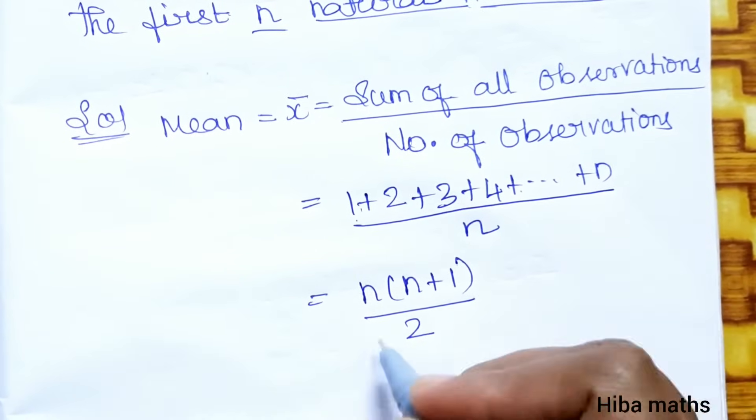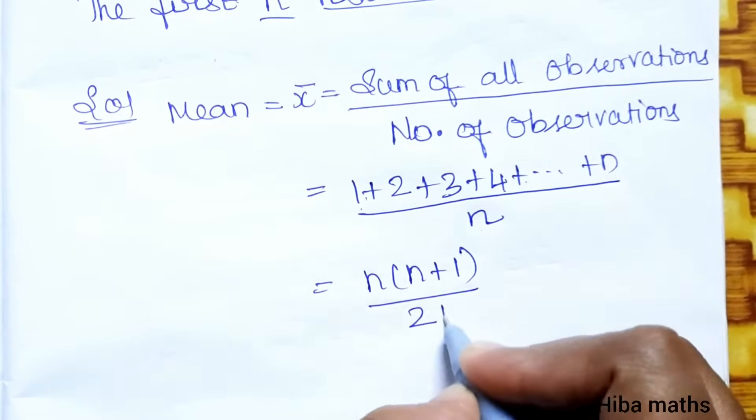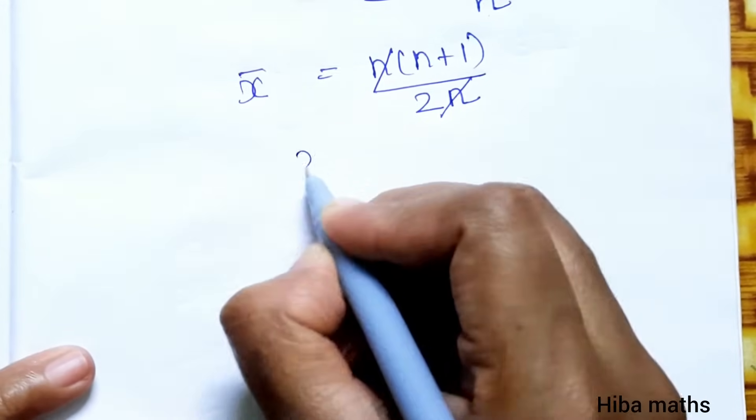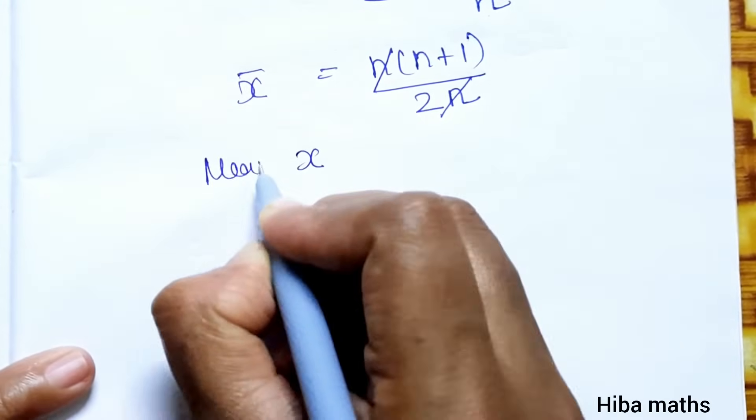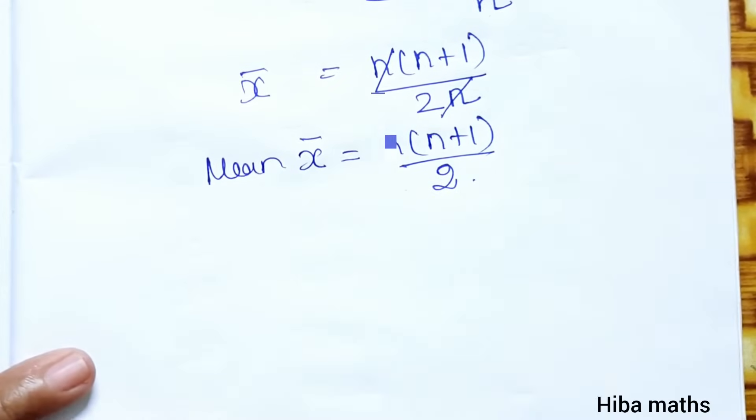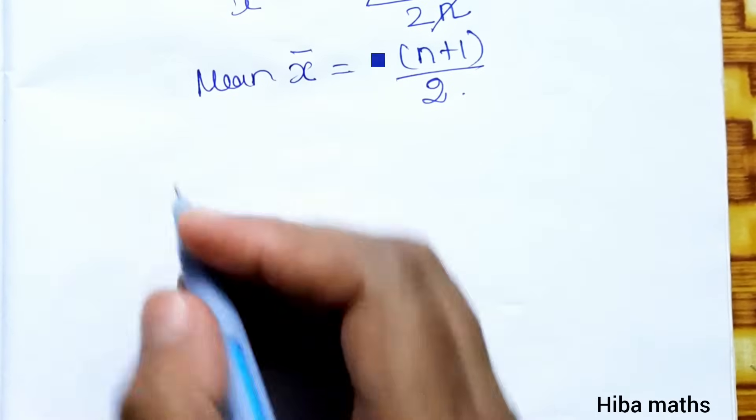Sum of natural numbers n into n plus 1 divided by 2. Already here is a value. What do we do? Cancel it. So mean value is n plus 1 by 2. Let's look at the variance.